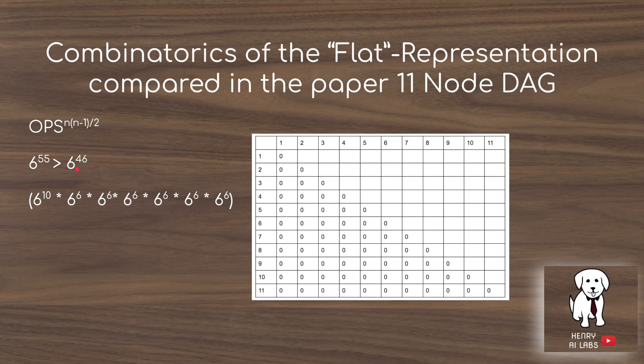The 6^46 for the hierarchical space is derived from the different combinations: 6^10 different ways to fill in the topmost cell with the different motifs, plus 6 different motifs each with 6^6 different ways of being constructed.